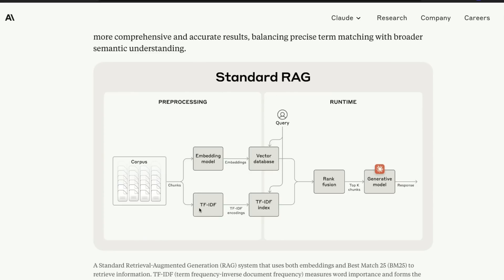This is a batch process — let's say this happens every day in your company. Whenever the user queries, that query comes to your existing system, it retrieves from the vector database, it retrieves from the TF-IDF index, and then it gets fused in rank fusion. Then it goes into the generative model, because ultimately you need an LLM to evaluate whatever document you're giving, correlate it with the question the user is asking, and craft a human-like answer with the knowledge it got. This is the typical RAG system.